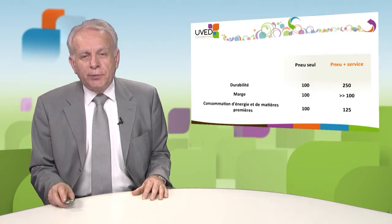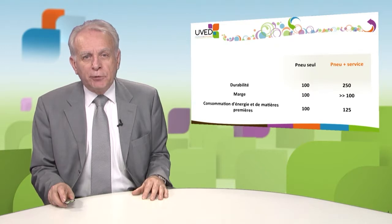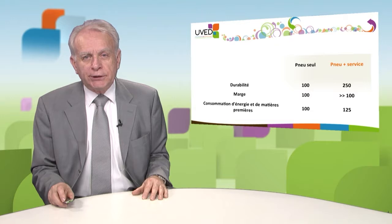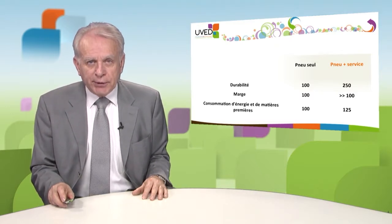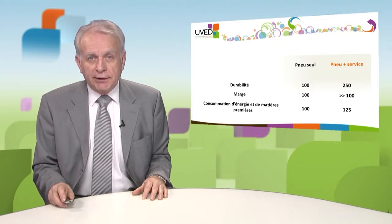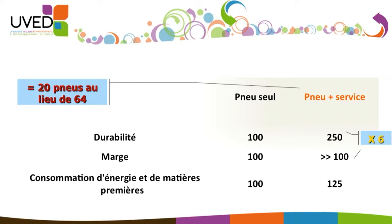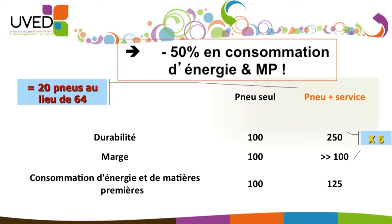When it's no longer possible to work on the tires, the technician will change the rolling layer. In this model, taking an index of 100 for three criteria, in the tire-plus-service version — that's functionality economy and selling of use — if we increase consumption of raw material and energy by 25 percent, we can increase the life of the tire by a factor of two and a half, meaning a factor of six overall. So we use 20 tires instead of 64 — that's minus 70 percent. With refurbishment, that means 50 percent saving in raw material and energy use.